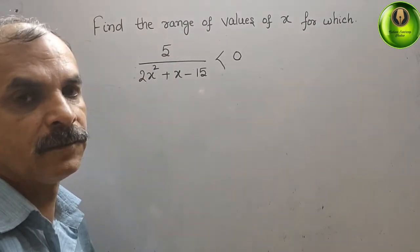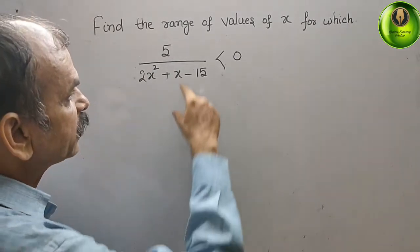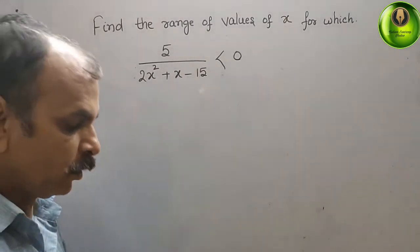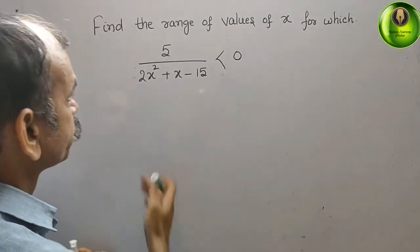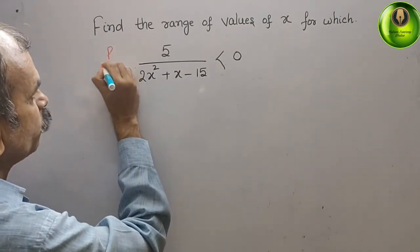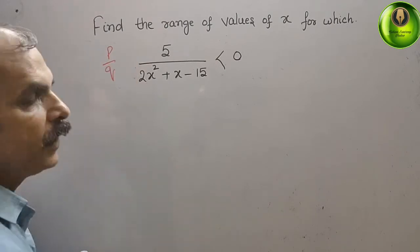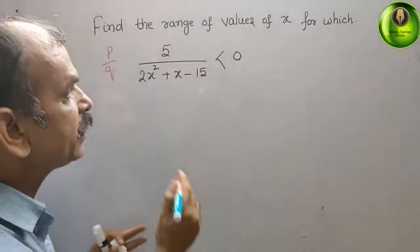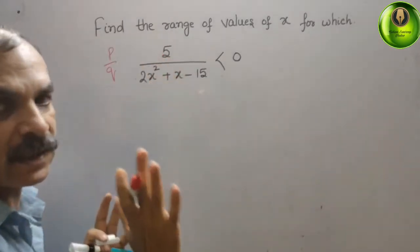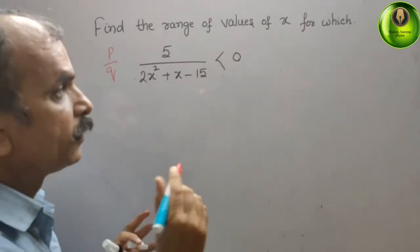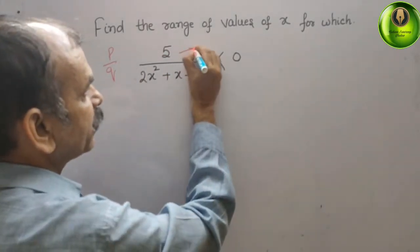Just understand this. This is in the form of P by Q. Here you can see, P is nothing but a constant. So 5 is a constant.